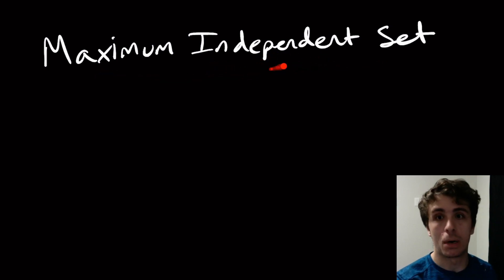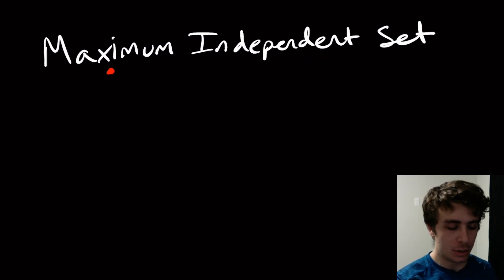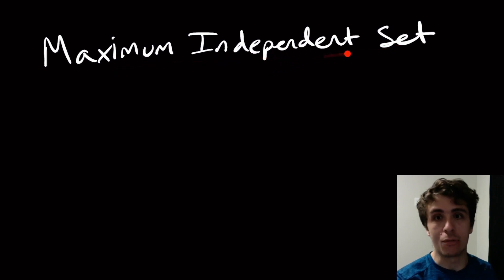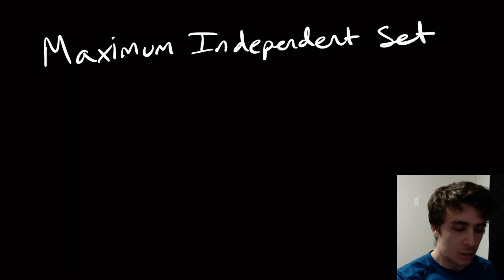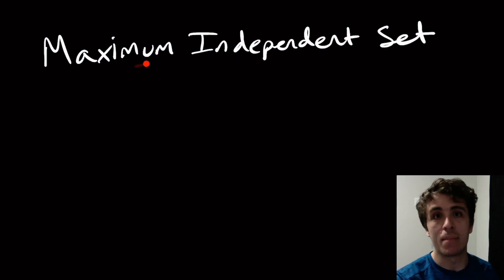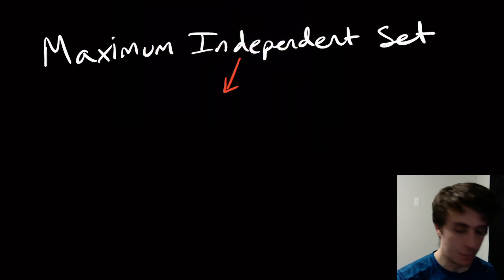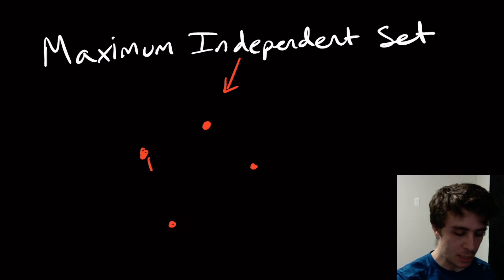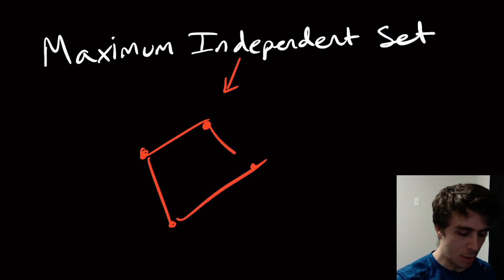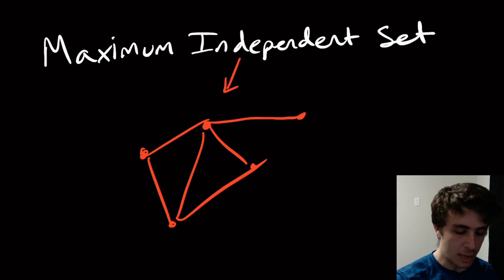This problem is actually really important — in fact, I deal with it in my own research. It's called the independent set problem, and we want to find the maximum independent set. So first, what is an independent set? We talked about graphs: collections of vertices (points) with lines (edges) between them. Let me make a simple graph here.